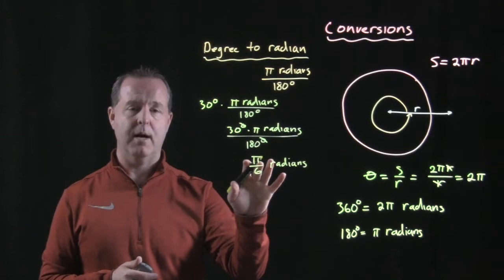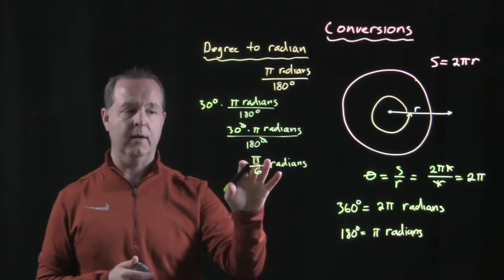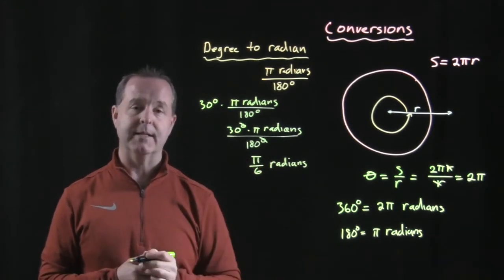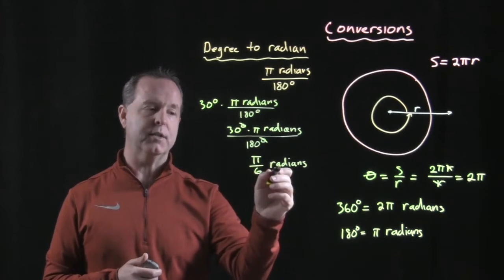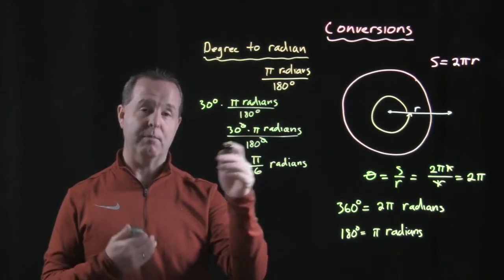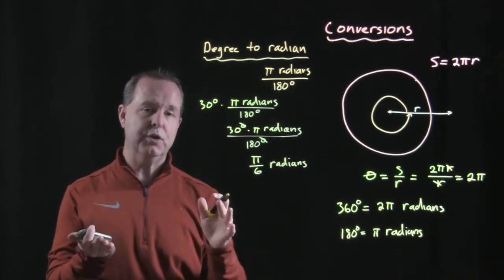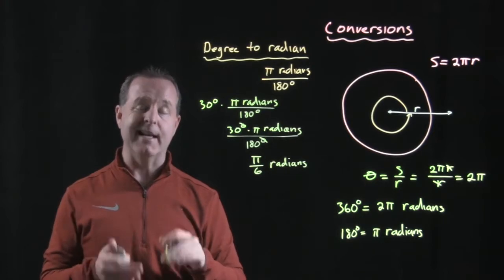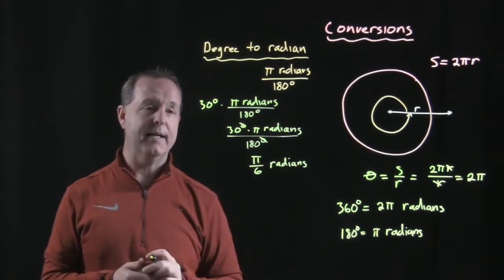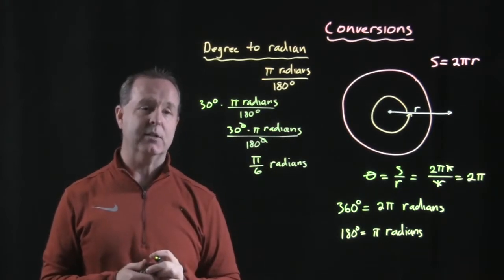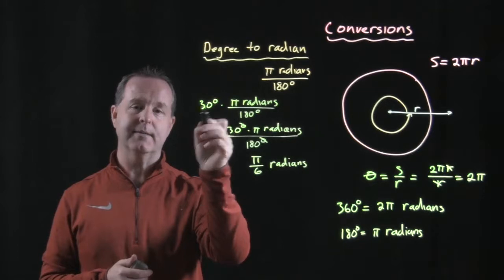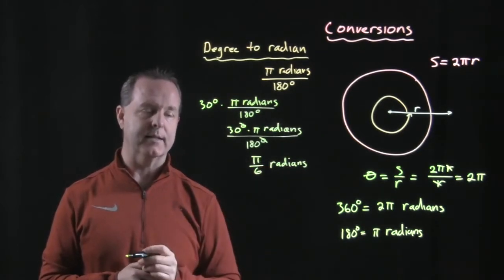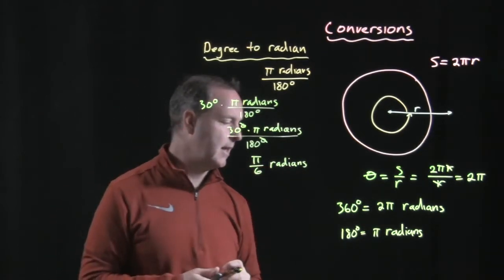I'm not going to approximate pi in the calculator and get an approximation, then divide that approximation by six. Leaving our solutions with pi in the solution is completely appropriate and even beneficial — it provides an exact solution. So 30 degrees converts over to pi sixths radians.